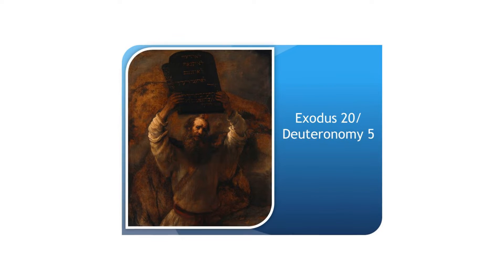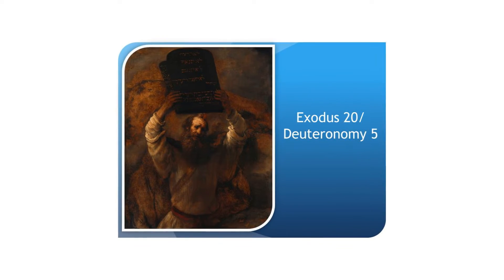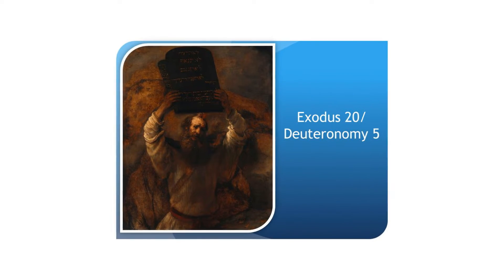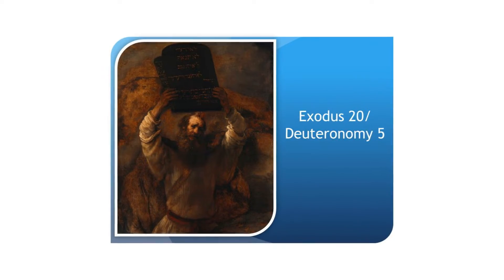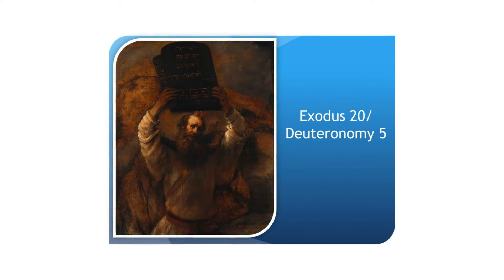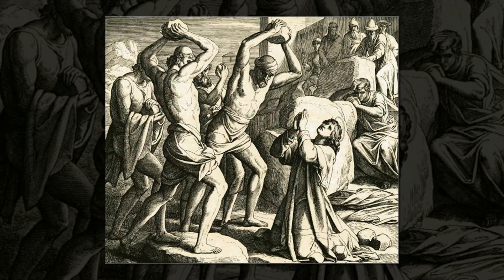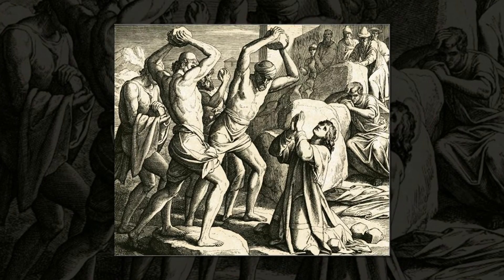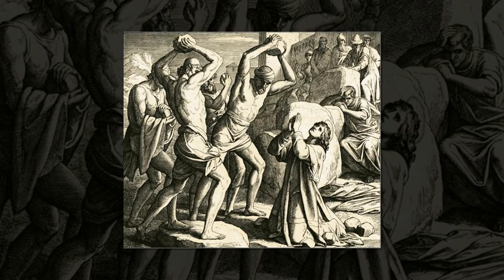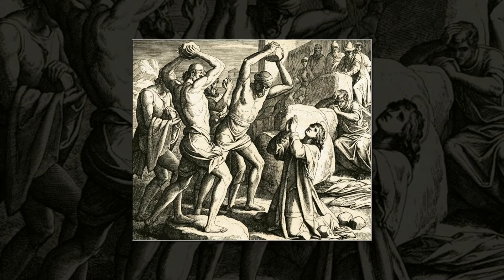As we examine the Ten Commandments, keep in mind that there are two versions of the commandments — one found in the book of Exodus, and a later edition in the book of Deuteronomy. And be aware that originally, in the time of Moses, the penalty for violating any of these commandments was death — death by stoning.